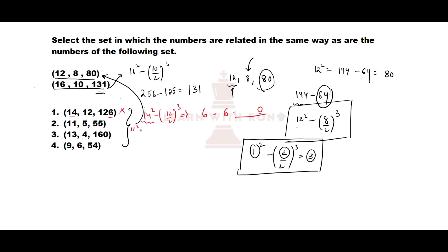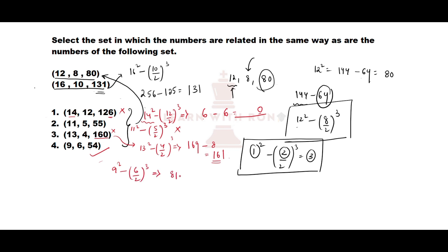Next option: 13 squared minus (4/2) cubed. 13 squared is 169. 4 by 2 is 2, and 2 cubed is 8. 169 minus 8 is 161, but the given number is 160 — not our answer. So the only remaining option is our answer. Let us verify: 9 squared minus (6/2) cubed. 9 squared is 81. 6 by 2 is 3, and 3 cubed is 27. 81 minus 27 is 54, which matches the third number. So our answer is the fourth option.